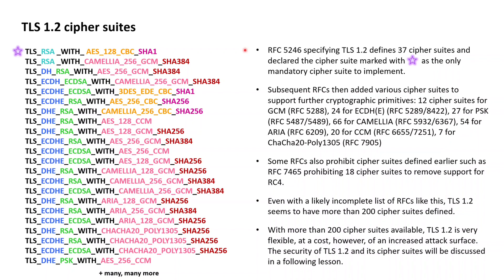Most of the other 36 cipher suites included in the original TLS 1.2 specification then either used RSA, static Diffie-Hellman, or ephemeral Diffie-Hellman for the key exchange, or used RC4, a stream cipher.